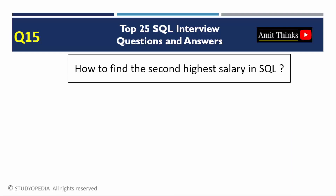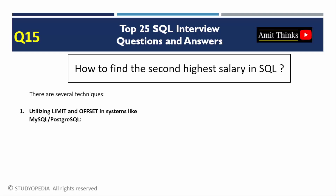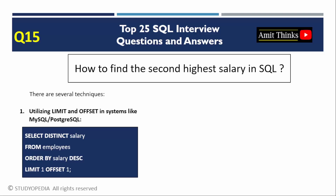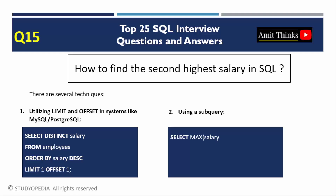Question 15: How to find the second highest salary in SQL? This is one of the most common interview questions and has multiple approaches. One approach uses LIMIT and OFFSET in systems like MySQL or PostgreSQL, with ORDER BY and LIMIT/OFFSET to retrieve the second highest salary. Another approach uses a subquery with the MAX function to find the second highest salary. These two are the most common ways to solve this problem.